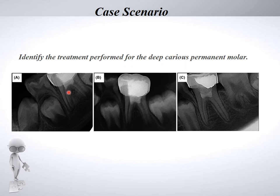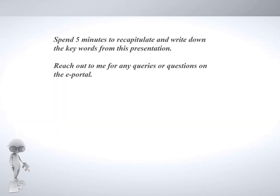Second case question: identify the treatment performed for deep caries in a permanent molar. There is a stainless steel crown with a radio-opacity only in the pulp chamber and an open root apex. In the follow-up, the open root apex is closing and eventually closes completely. This is a case of apexogenesis achieved through complete pulpotomy — the coronal pulp was removed and the radicular pulp was preserved.